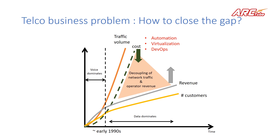The second one is virtualization. Virtualization as a concept has been quite successful in the IT and computing world, and we are trying to bring the same capabilities — or even more — to the networking world. In virtualization, we try to use the resources available in your networks, systems, or data centers in the most optimal way. The third one is DevOps, or development operations, where we combine the development cycles and the operational cycles together and adapt to a DevOps-type operational environment, which can also bring your costs down.